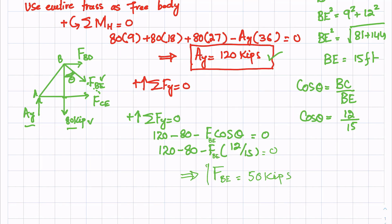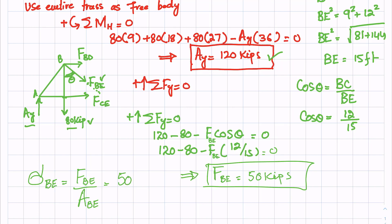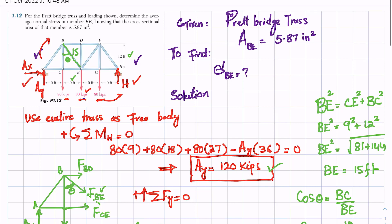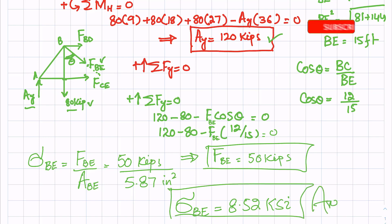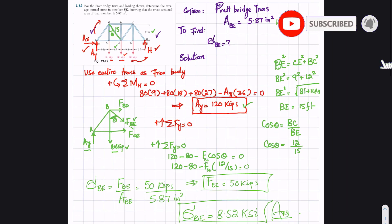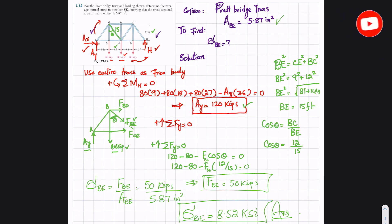Now we have FBE = 50 kips. The average normal stress in member BE equals force divided by cross-sectional area: σ = 50 / 5.87 = 8.52 ksi. This is the answer. I hope you have a clear understanding of this type of problem. Thank you for watching.